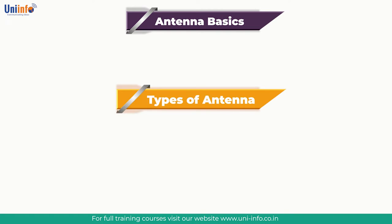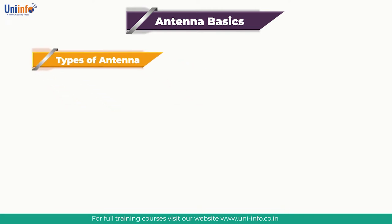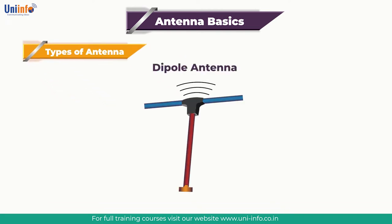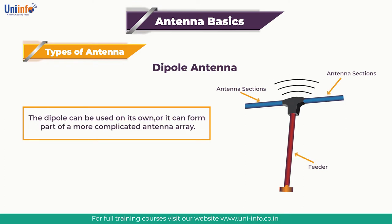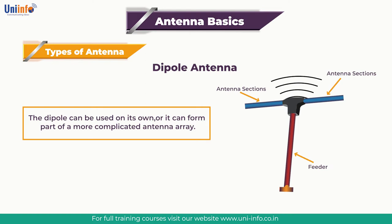Our next topic is Types of Antenna. The first type is the Dipole Antenna. The Dipole Antenna, or Dipole Aerial, is one of the most important forms of RF antenna. The dipole can be used on its own or it can form part of a more complicated antenna array. It is widely used for a variety of types of radio communication, incorporated into many other RF antenna designs where it forms the radiating or driven element.